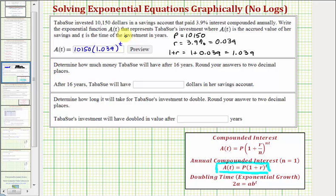The next question asks us to determine how much money Tabasou will have after 16 years, and we're asked to round to two decimal places. The account value after 16 years will be the function value A(16), which equals 10,150 times 1.039 raised to the 16th power.